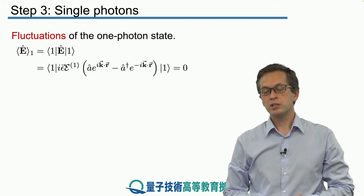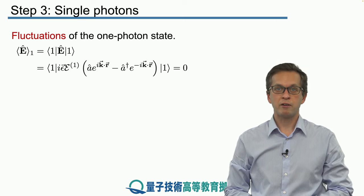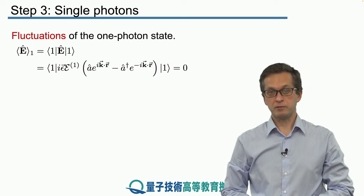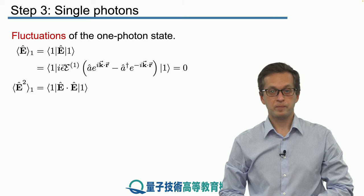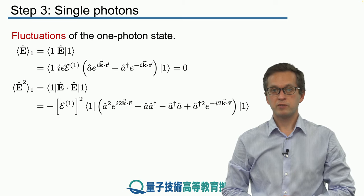But as we saw, just having the average equal to 0 doesn't mean that the field is empty or there aren't any fluctuations. So let's compute the second moment of the electric field given by E squared. And here we will see a deviation from our previous calculations.